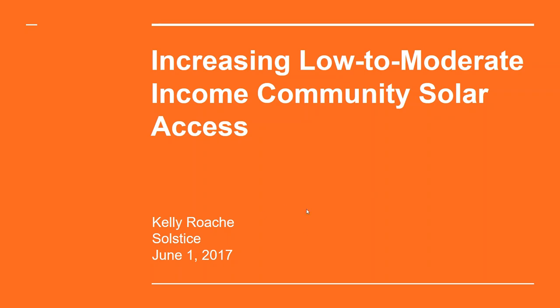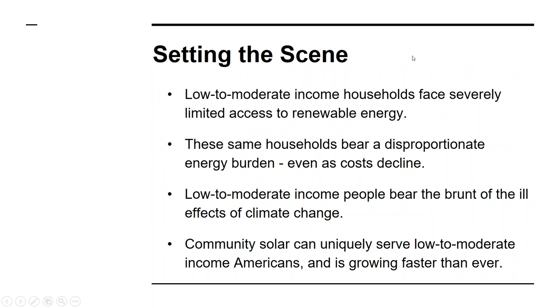Solstice is a social enterprise operating in the community solar space, focused on increasing community solar access to the 50 to 80% of folks who are locked out of the solar market because they have unsuitable roofs — whether because they don't own them, have shading, or other situations making it impossible to install rooftop panels. A sizable portion of these individuals are low to moderate income. Let's look at some of the restrictions that low to moderate income people face that make access to solar and community solar particularly challenging.